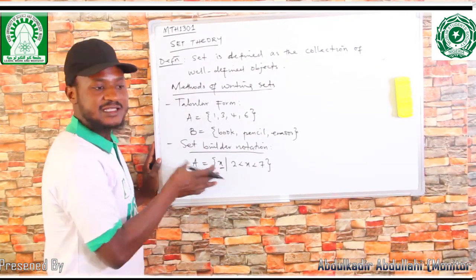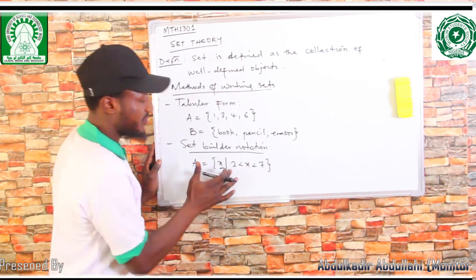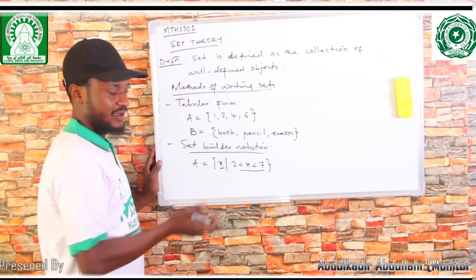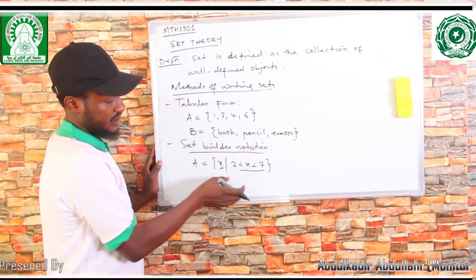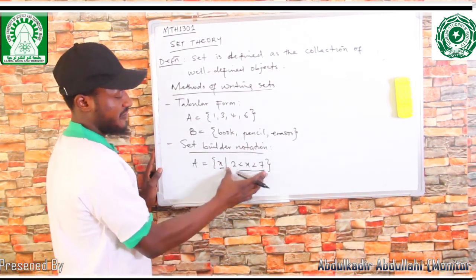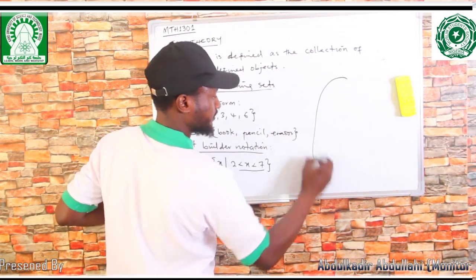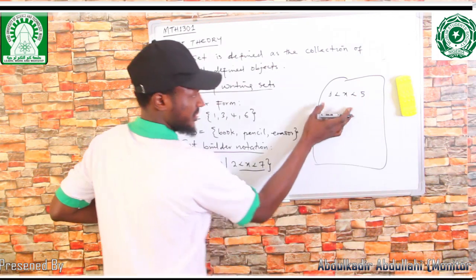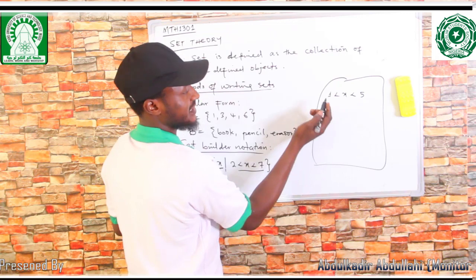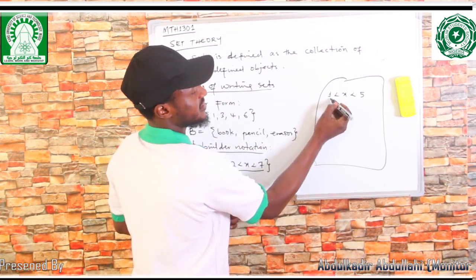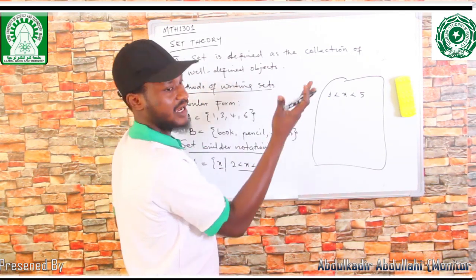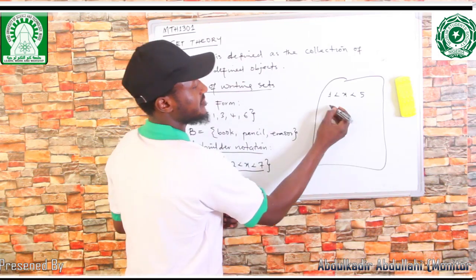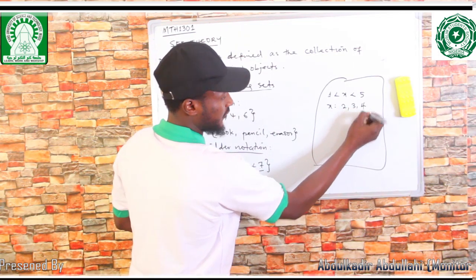So x here is the element of the set, but x is unknown — you have to find it using the given property. This property means the element is from 2 to 7, with 2 exclusive and 7 exclusive. For example, if I have 1 < x < 5, this means x is from 1 to 5, but 1 and 5 are exclusive. Exclusive means 1 is not included — we start counting from the number after 1, which is 2 — and 5 is also out, we stop at the number before 5, which is 4. So x here is going to be {2, 3, 4}.